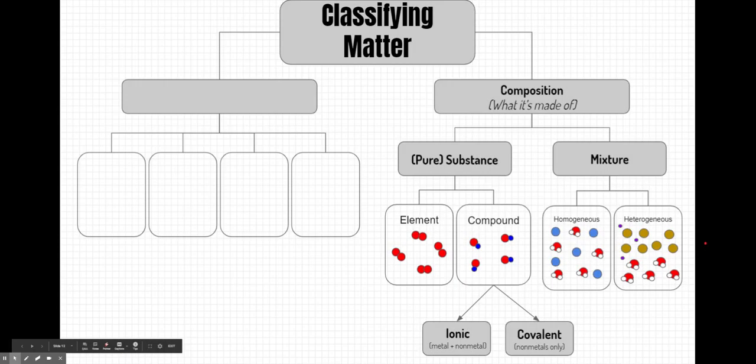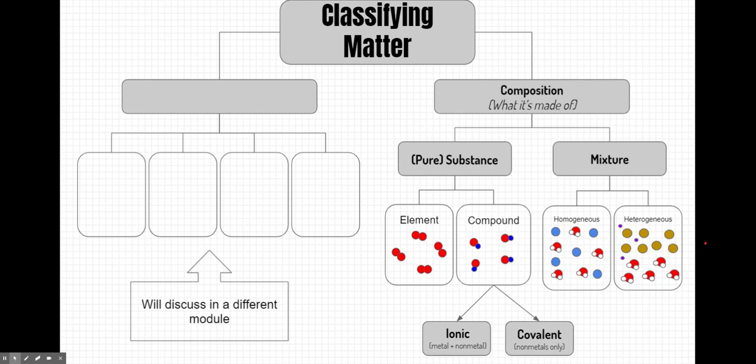So let's add those two models to our classifying matter flowchart. Notice, again, we can see the micro-level models, and we can visualize how that might apply to macro-level or real-life models. Now, what about this other half of the classifying matter flowchart? We'll actually discuss this in a different module. So go ahead and hang tight on this one. We'll come back to it later.